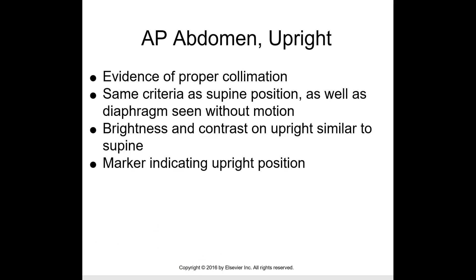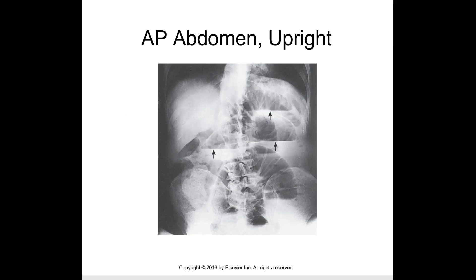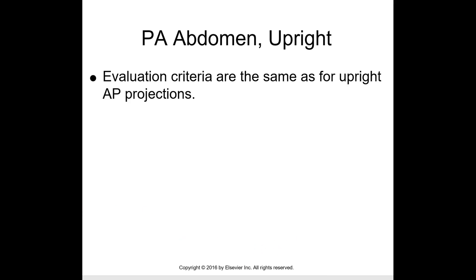For the AP upright, evidence of proper collimation follows the same criteria as the supine position, as well as the diaphragm seen without motion. The IR is centered two inches above the iliac crest. Brightness and contrast on upright is similar to the supine. The image should have a marker indicating the upright position — arrows are shown indicating upright, but once again there is no right or left marker.